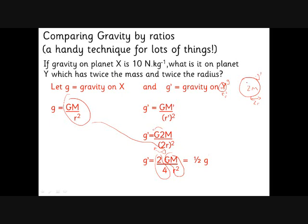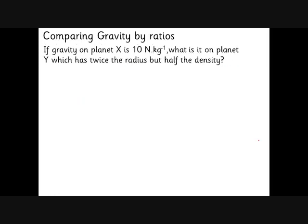As you get better at these you'll see: increasing the mass by a factor of 2 makes G dash twice as big, but increasing the radius by a factor of 2 makes it 4 times smaller. Overall it's gone up by a factor of 2 and down by a factor of 4, so it's going to be half as much.